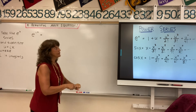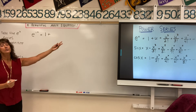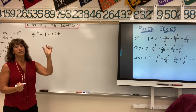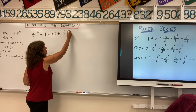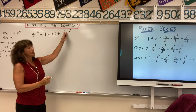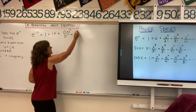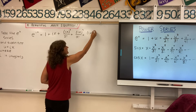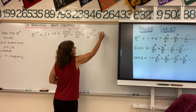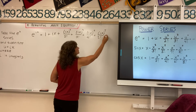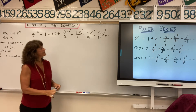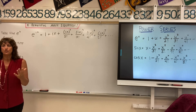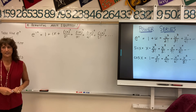So e to the u equals 1, plus u — which we replace with i times x — plus u squared over 2 factorial, where we replace u with i times x, then i times x to the 3rd power over 3 factorial, then i times x to the 4th power over 4 factorial, and then i times x to the 5th power over 5 factorial, and so on to infinity. So we're taking our e to the u power series and substituting i times x for each u.